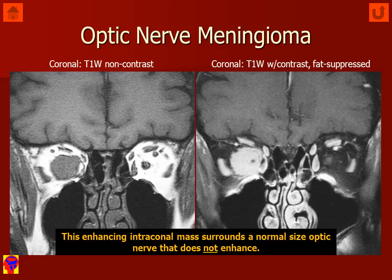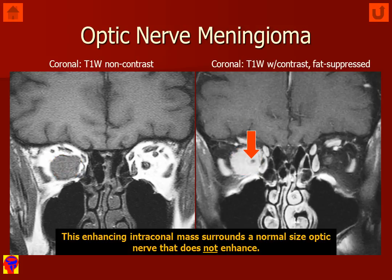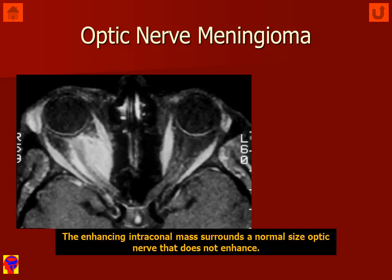On the non-contrast image in the coronal plane, we see an intraconal mass. If we look at the enhanced image, looking carefully in the center of the enhancing lesion, we can see a non-enhancing rounded structure, which is the normal optic nerve. In the patient's left orbit, we can see a non-enhancing optic nerve in the green circle. So this enhancing intraconal mass surrounds a normal-sized optic nerve that does not show contrast enhancement.